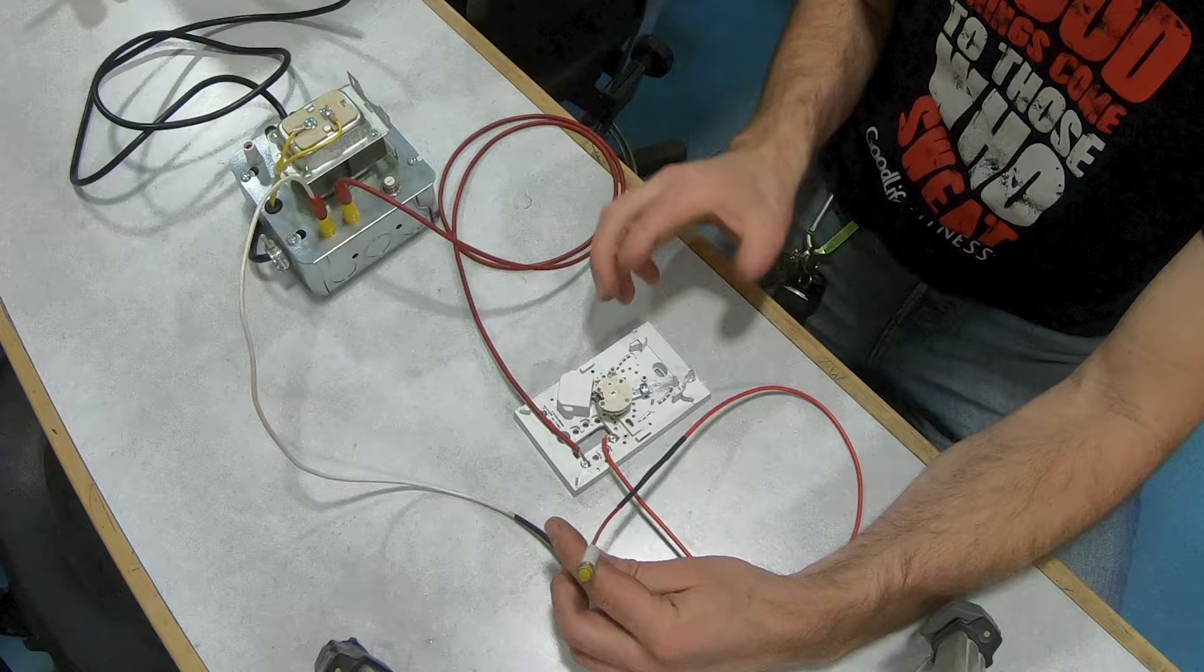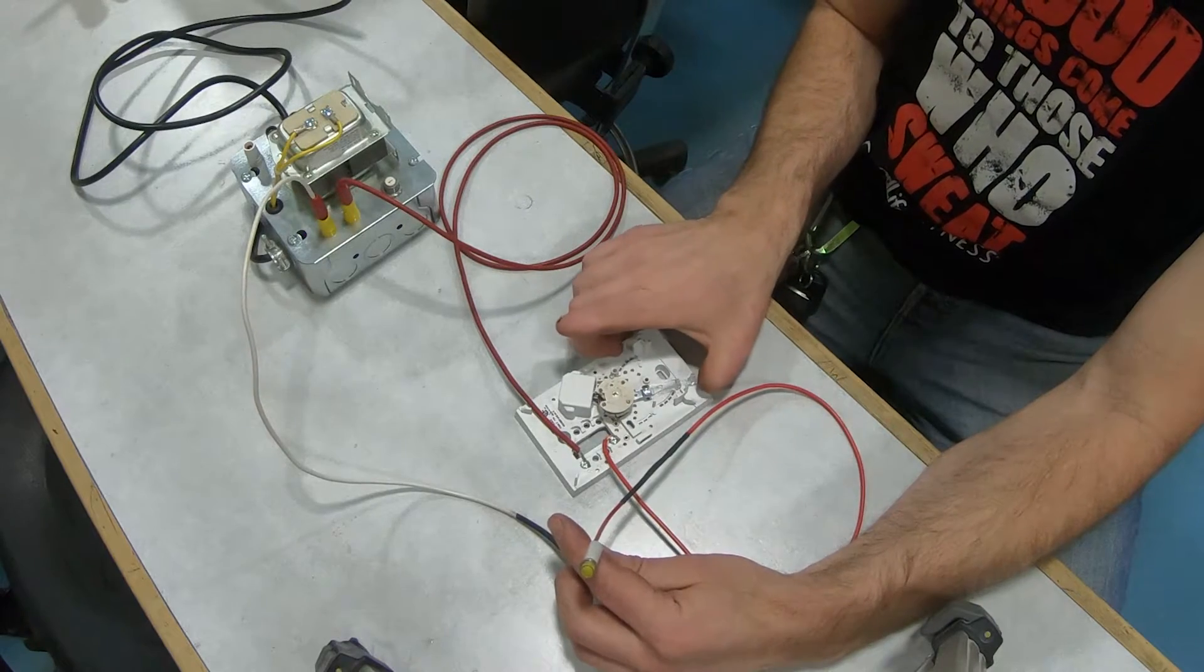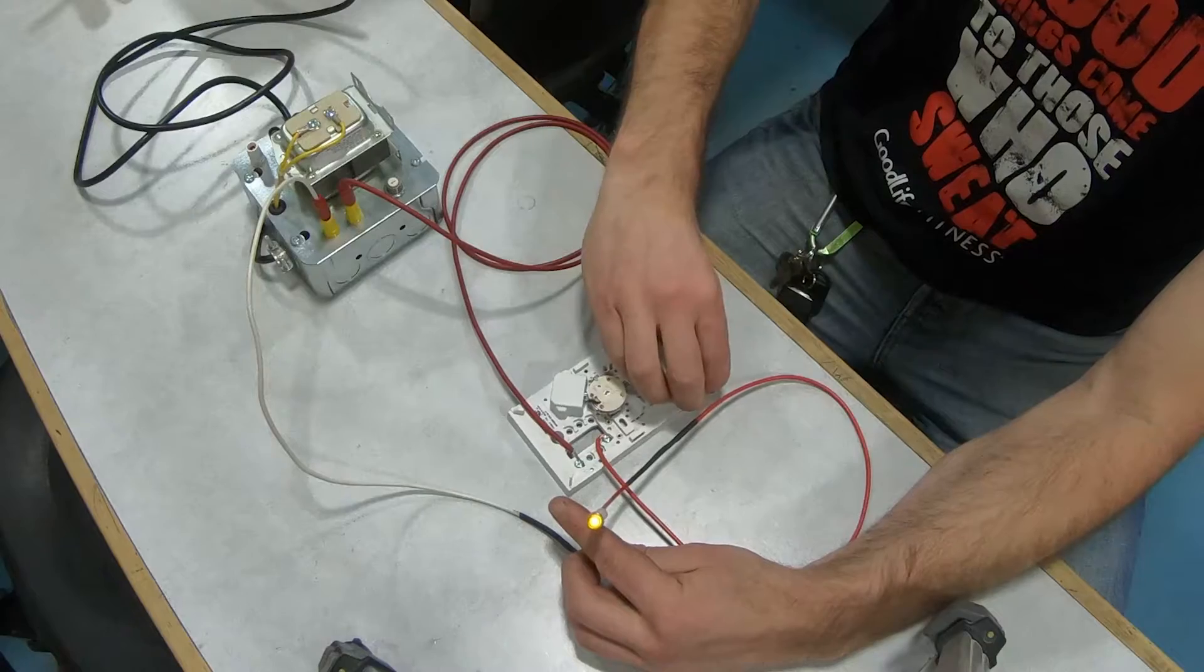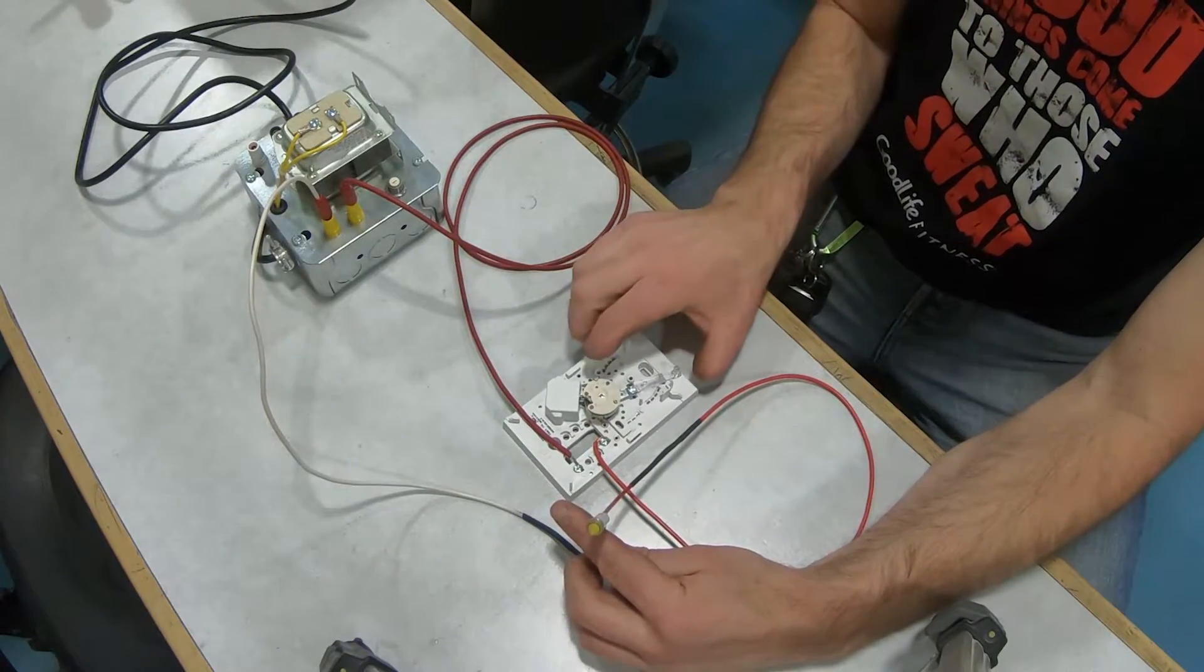Right now the thermostat is in the open or off position, and we can see the LED is off. But when I flip it to the closed or on position, the LED light comes on, and I can turn that off and on just by flicking this lever.